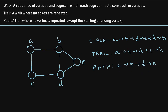One thing to note about walks, trails, and paths is that every path is a trail and a walk, and every trail is a walk. You can think of it as going from a walk to a path, we're getting more restrictive in our definition — more specific about the requirements that we have to meet.